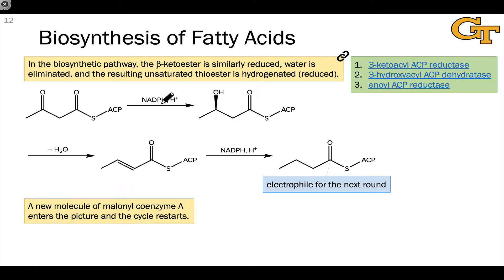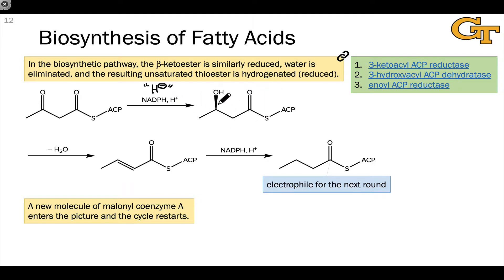In the biosynthetic pathway, the source of hydride is nature's source of hydride: NADPH or NADH. Keep in mind that this is nature's equivalent of H-. Hydride from NADPH adds to the carbonyl carbon, and a proton adds to the carbonyl oxygen to give this beta-hydroxythioester. Notice that this stereocenter is formed as a single enantiomer in the biochemical context, because the enzyme is a chiral catalyst.